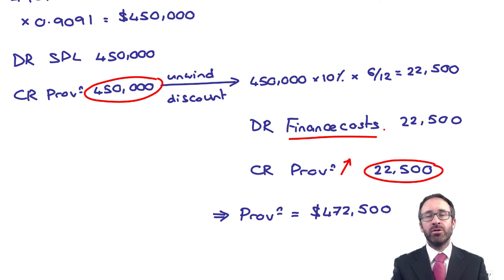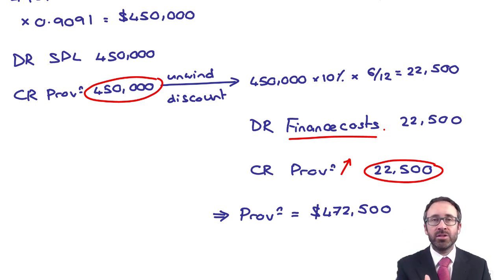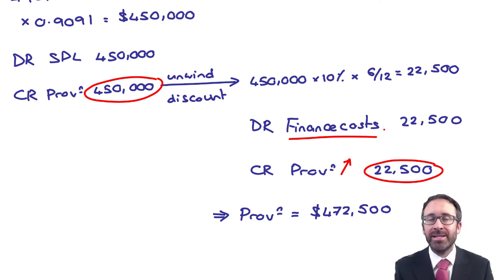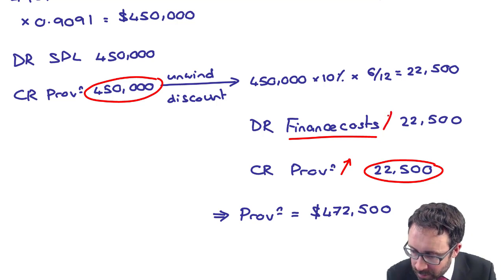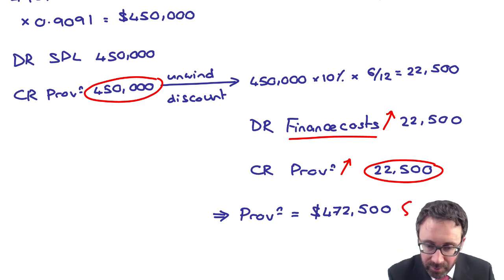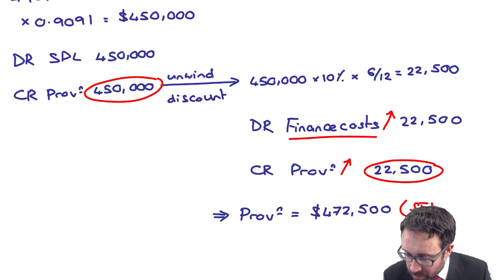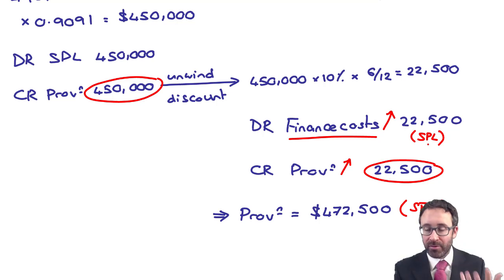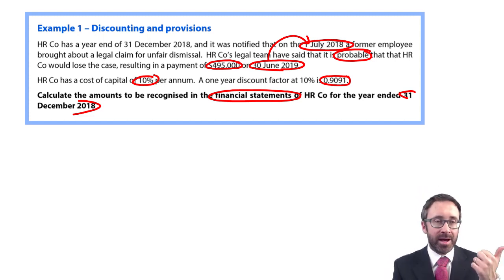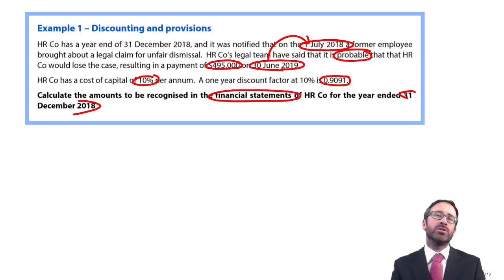Do not put that $22,500 through your operating expenses — it goes through finance costs. If you put it through operating expenses, you will lose marks. The debit is to finance costs on the statement of profit or loss. So you have a provision of $472,500 on the statement of financial position, and $22,500 in finance costs on the statement of profit or loss. That's the 31st of December 2018.